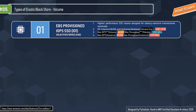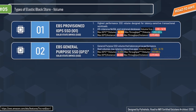The second volume type is General Purpose SSD — the gp2 volume. gp2 is the default EBS volume type for EC2 instances, backed by solid-state drives, and suitable for a broad range of transactional workloads including development/testing environments, low-latency transaction workloads, and boot volumes. Volume size: 1 GB to 16 TB. Max IOPS per volume: 16,000. Max throughput per volume: 250 MB/s. Max IOPS per instance: 80,000. Max throughput per instance: 2,375 MB/s. gp2 volumes can be used for boot volumes.